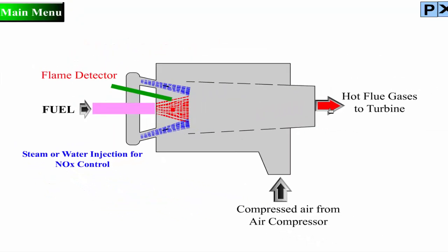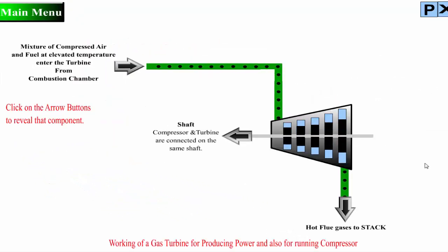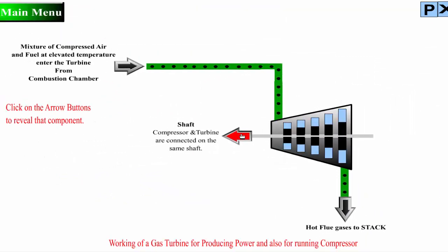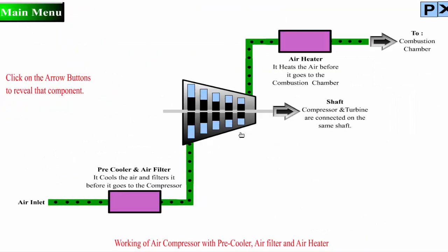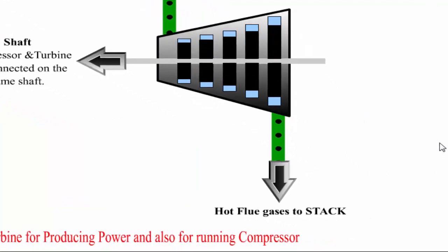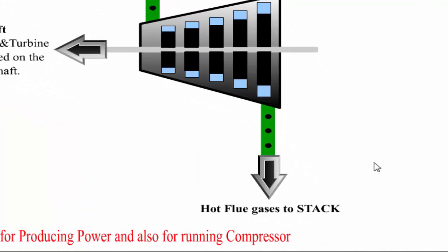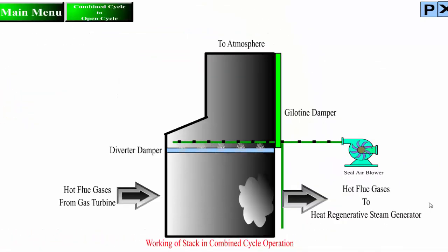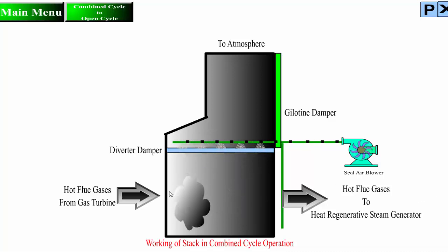One key to a turbine's fuel-to-power efficiency is the temperature at which it operates. Higher temperatures generally mean higher efficiencies, which in turn can lead to more economical operation. Gas flowing through a typical power plant turbine can be as hot as 2,300 degrees Fahrenheit, but some of the critical metals in the turbine can withstand temperatures only as hot as 1,500 to 1,700 degrees Fahrenheit. Therefore, air from the compressor might be used for cooling key turbine components, reducing ultimate thermal efficiency.